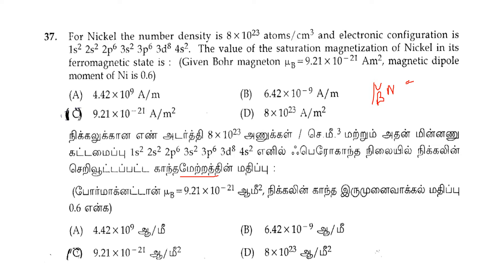The magnetic dipole moment for nickel is 0.6 Bohr magnetons. The number density Z is equal to 8.28 × 10²³ per meter cubed. The Bohr magneton value μB is 9.21 × 10⁻²¹ ampere per meter squared.